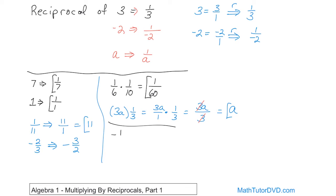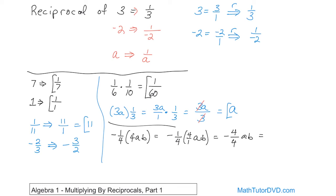What if we have negative 1 fourth times 4 times a times b? Write 4 as 4 over 1. The negative stays along for the ride. You multiply the tops: 4 times 1 gives 4, and on the bottom: 1 times 4 gives 4. So you have negative 4ab over 4. The fraction 4 over 4 is 1, so it divides away, and you end up with negative a times b.